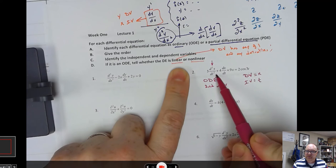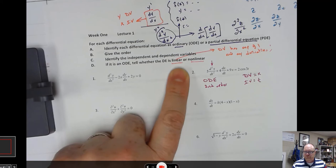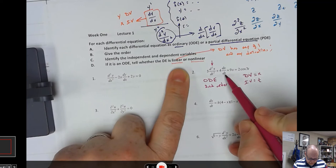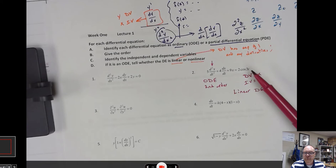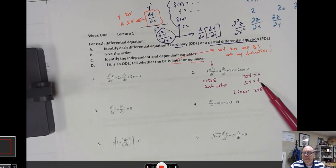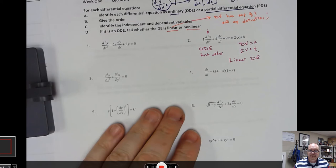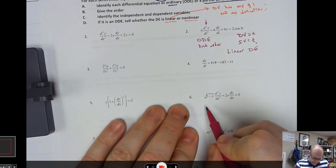Now determine if it's linear or nonlinear. The derivatives of the dependent variable — that second derivative is not being squared; there's no square root. The first derivative — nothing funny going on. The function itself is to the first power. So this is a linear differential equation. Some of you may think the cosine makes it nonlinear, but that's not true — the cosine is based on the independent variable. Had it been a cosine of x the dependent variable, it would be nonlinear.